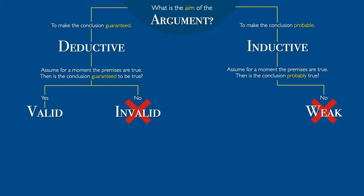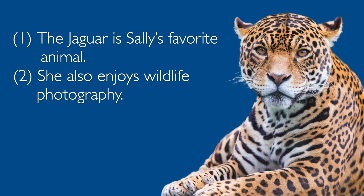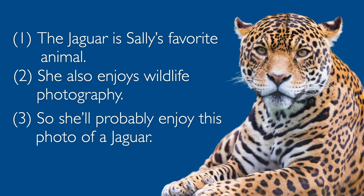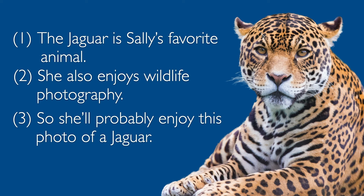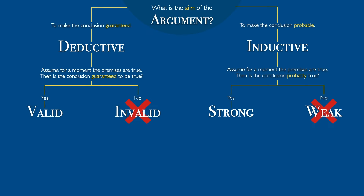But sometimes when you assume the premises are true, it's clear that the conclusion would be probable — in that case, we call the reasoning strong. For example: the jaguar is Sally's favorite animal; she also enjoys wildlife photography; so she'll probably enjoy this photo of a jaguar. Of course, it's at least possible that Sally won't like this photo — maybe she's tired of jaguar photography, or there's something about this particular jaguar she doesn't like. But still, it seems pretty reasonable to think that probably she'll enjoy this photo. After all, she enjoys wildlife photography and this is her favorite animal. So it's a strong argument — it succeeds in its aim of a probable conclusion.